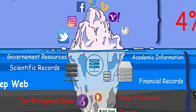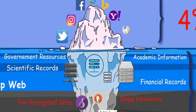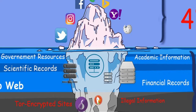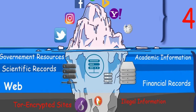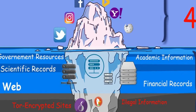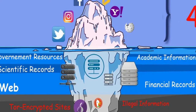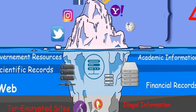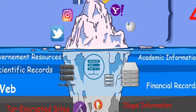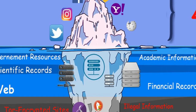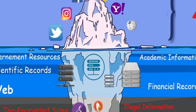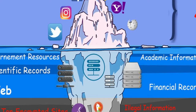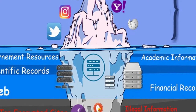Surface Web: It is the part of the web which is accessible publicly. It is indexable by the search engines and accessible through traditional web browsers like Chrome, Firefox, etc. It consists of 5% of the total content on the internet.